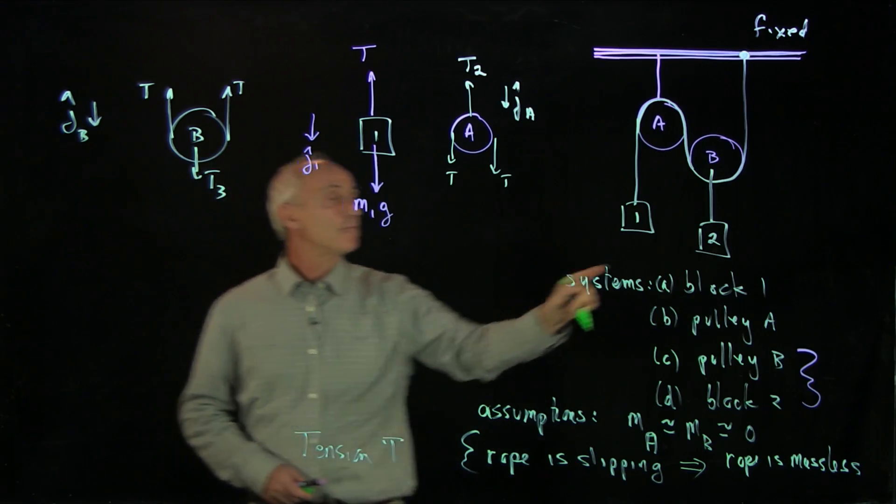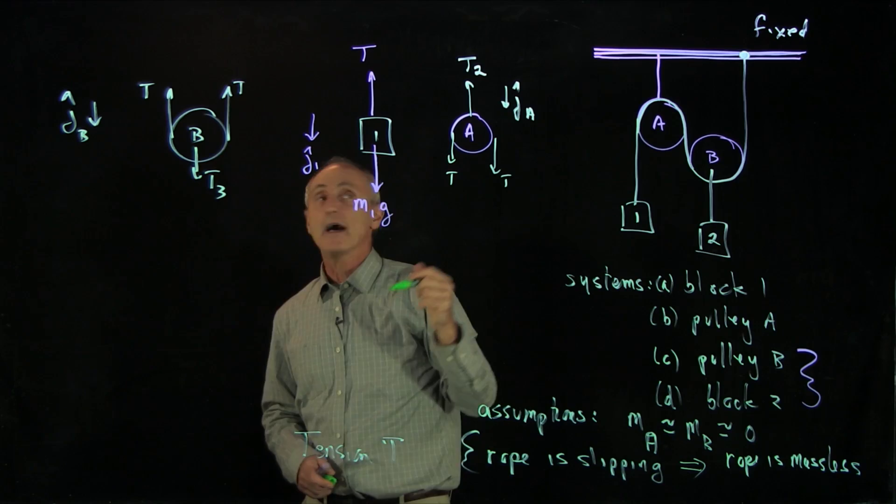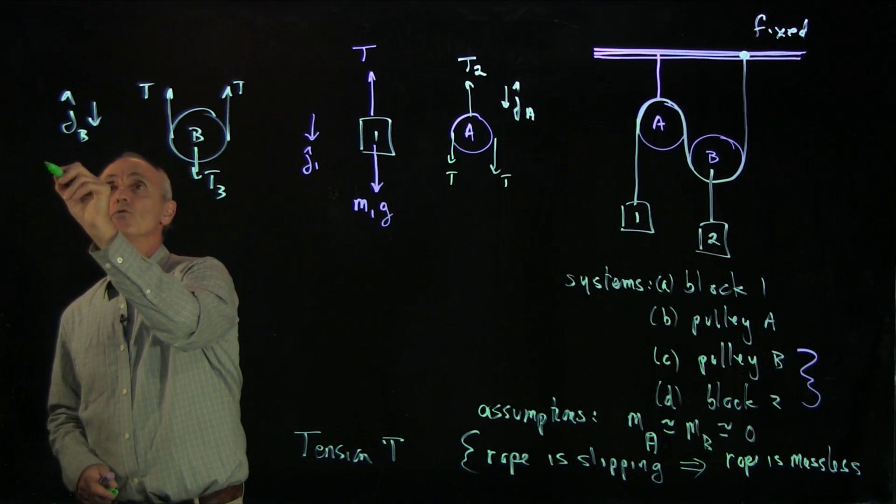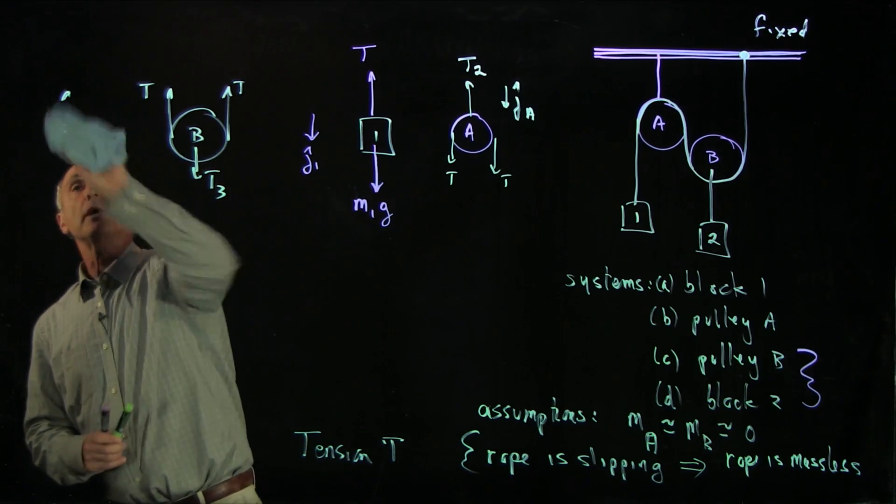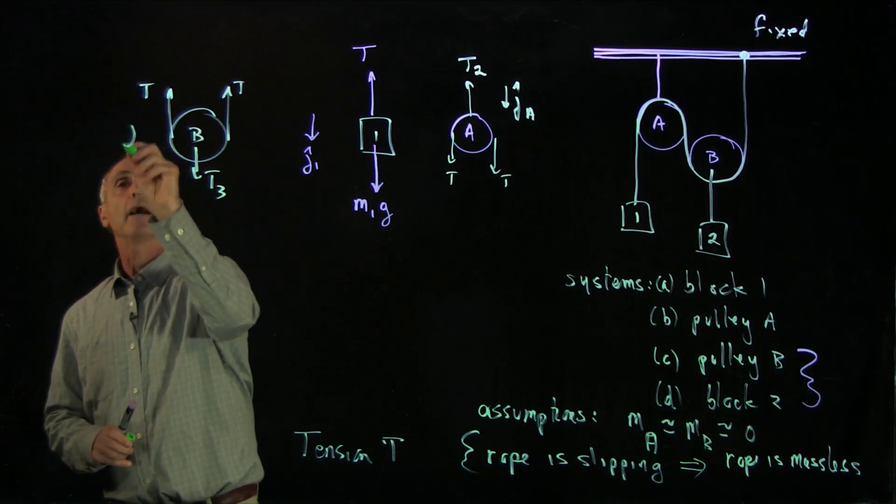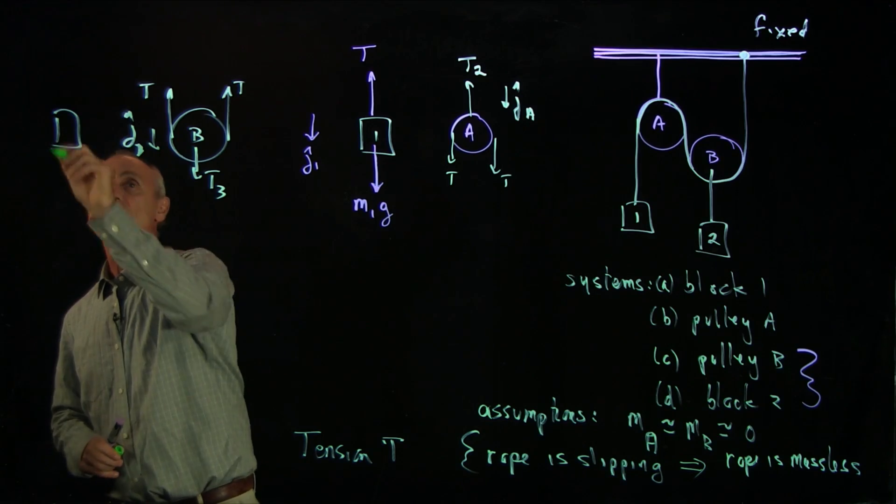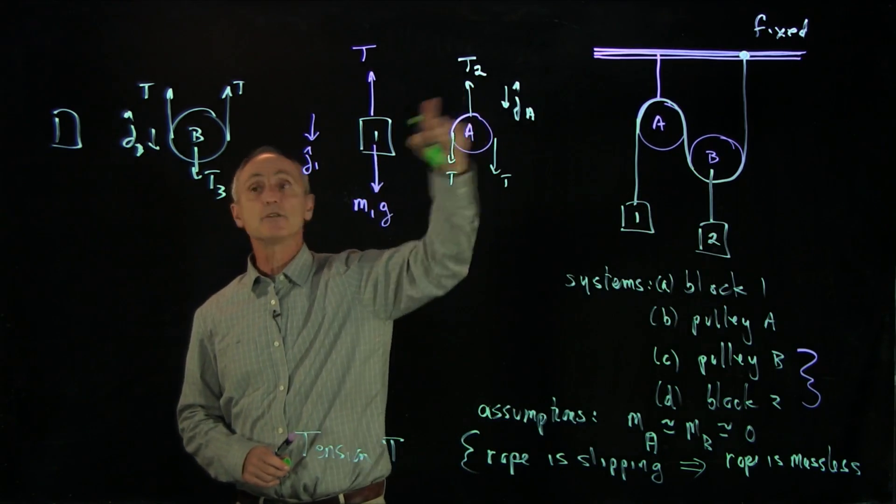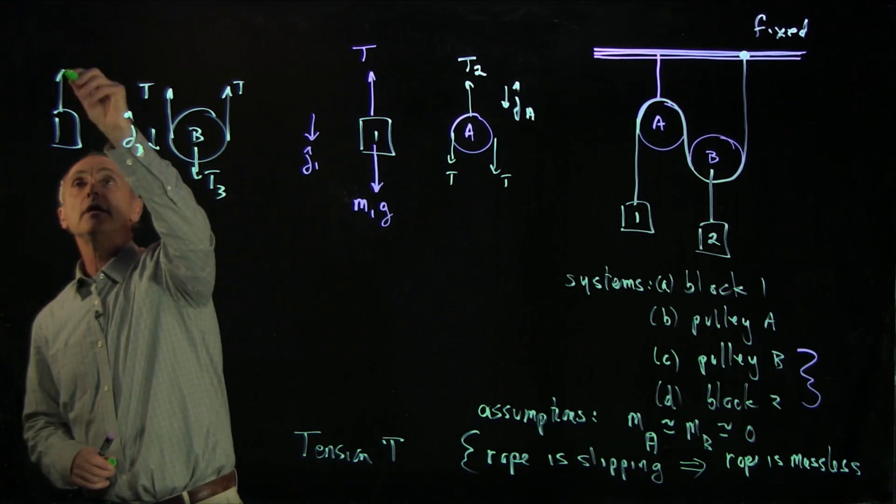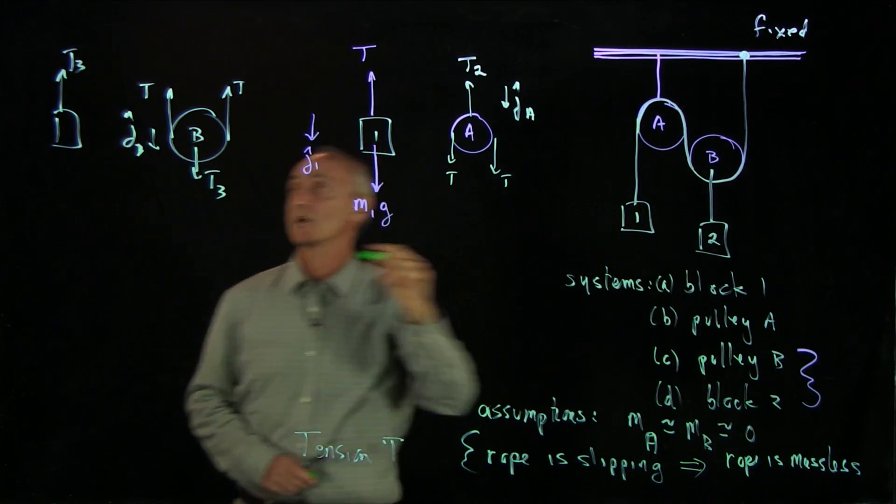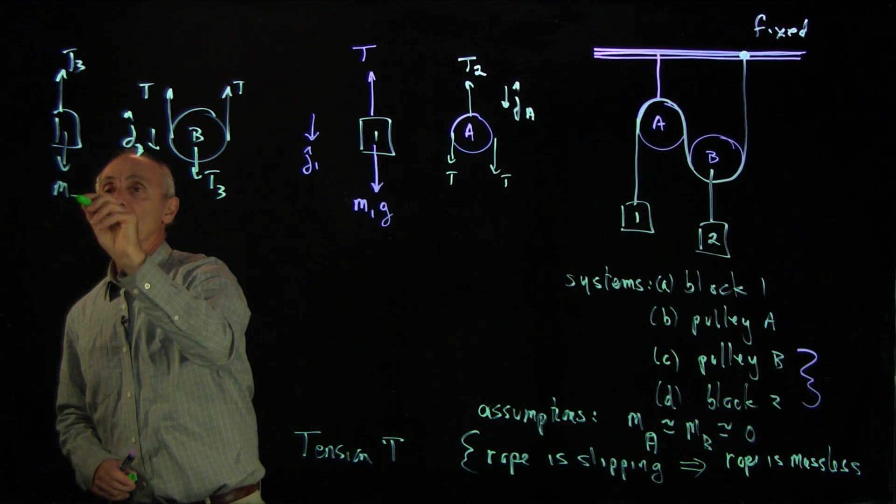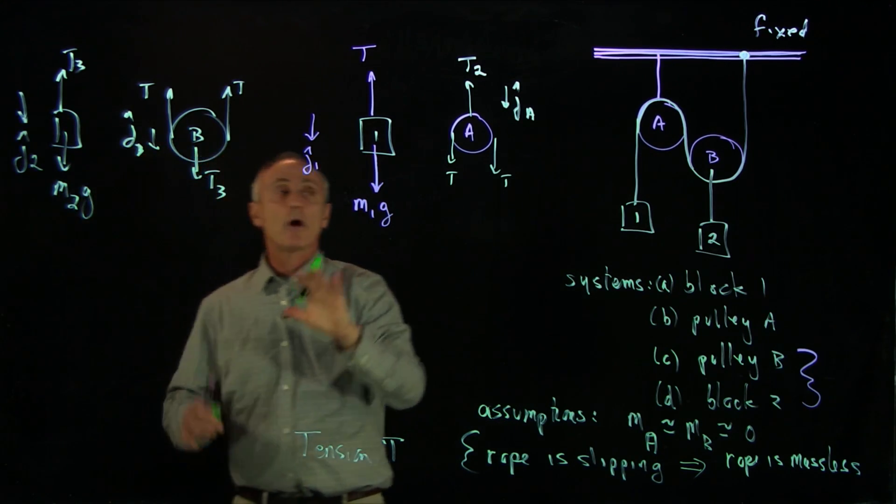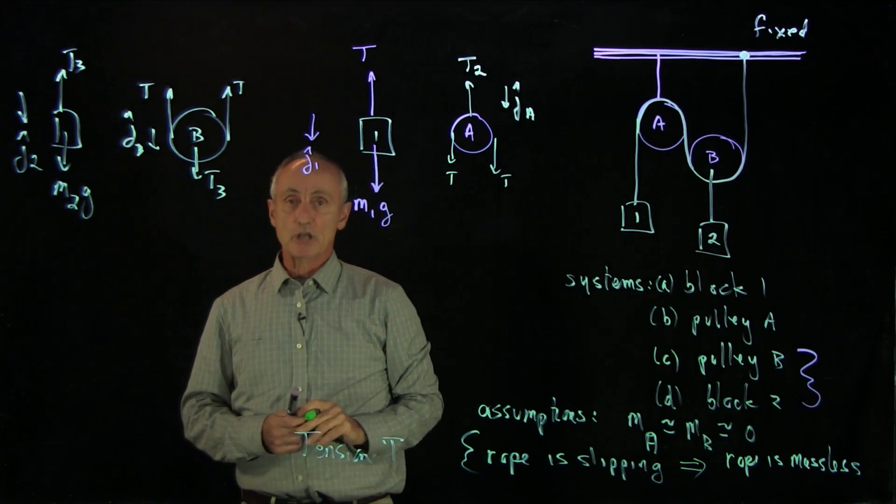Finally, I have block 2, so I'll draw that over here. I'll write block 2. Let's save a little space here. We'll have j hat B downwards. Block 2, what do we have there? We have the string pulling up block 2, which we've identified as T3. And we have the gravitational force on block 2, downward m2g. And there, we have j hat 2. So I've now drawn the free body diagrams on the various objects.